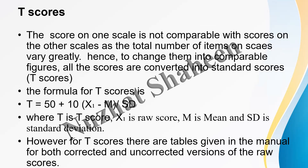The lower cutoff is 30 and the upper cutoff is 70 in T-scores. Because we have many sub-scales with different total numbers of items, scores cannot be directly compared. To convert them into comparable figures, they are converted into standard scores called T-scores. The formula is: T = 50 + 10 × (X1 − M) / SD, where T is the T-score, X1 is the raw score, M is the mean, and SD is the standard deviation.